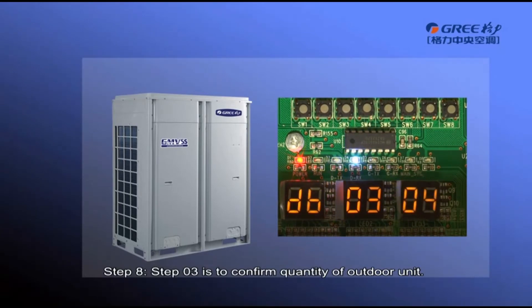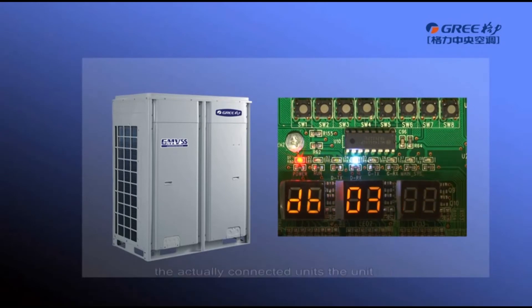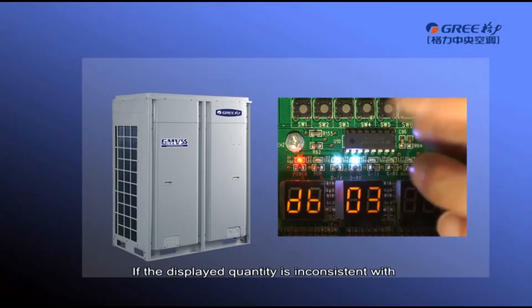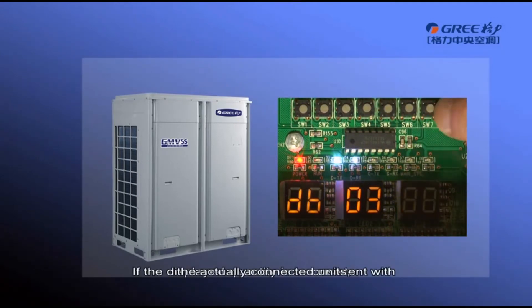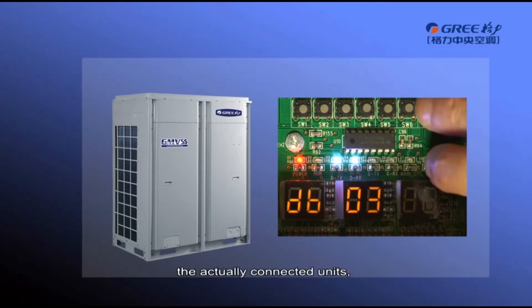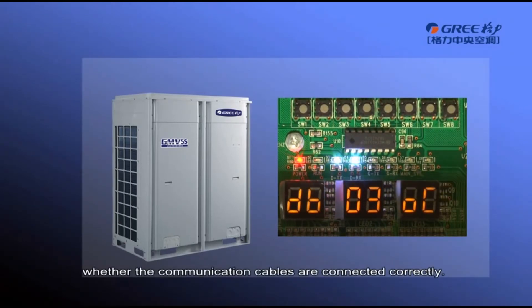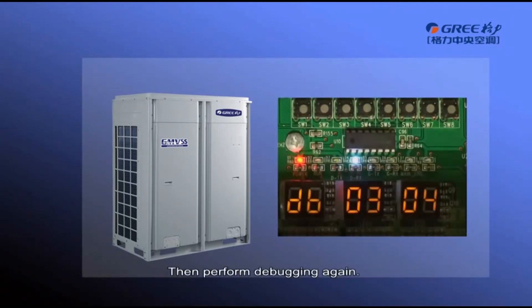Step 3 is to confirm the quantity of outdoor units. If the displayed quantity is consistent with the actually connected units, the unit enters step 4 automatically. If the displayed quantity is inconsistent, power off the outdoor units and check whether the communication cables are connected correctly, then perform debugging again.